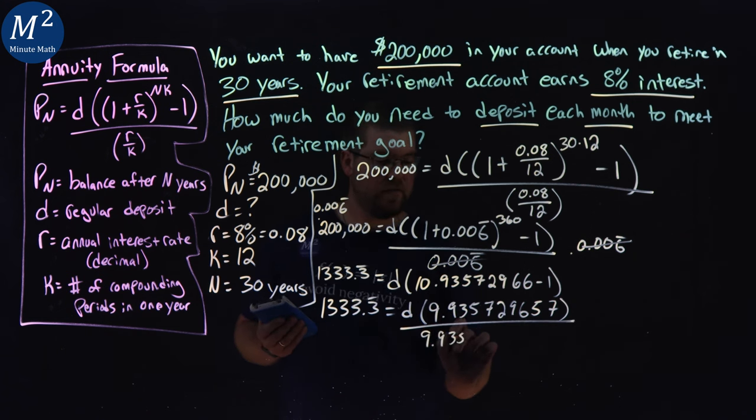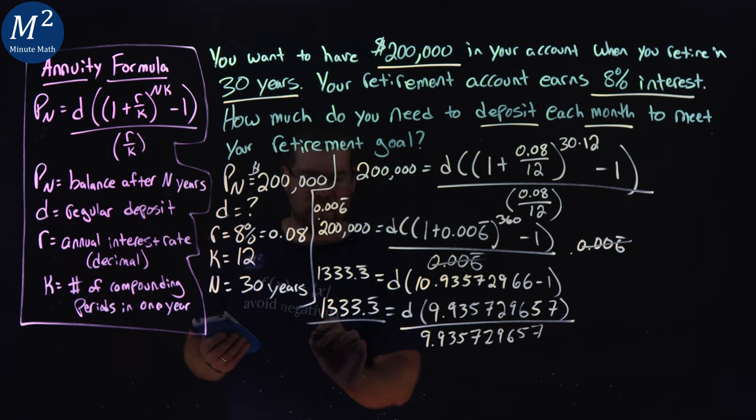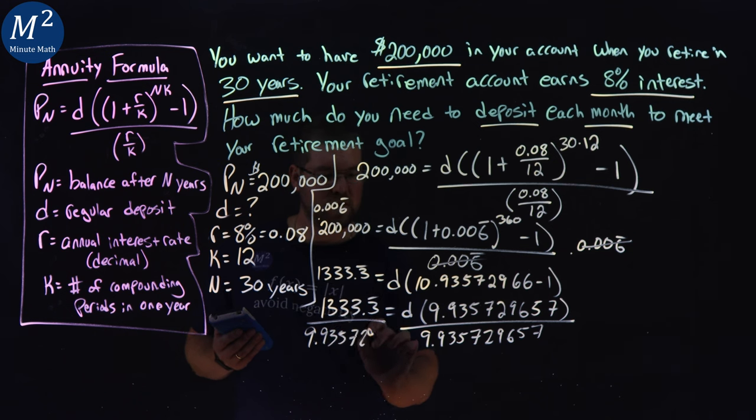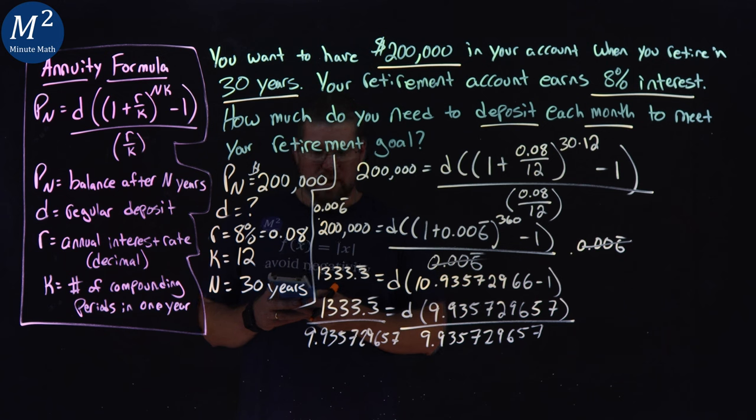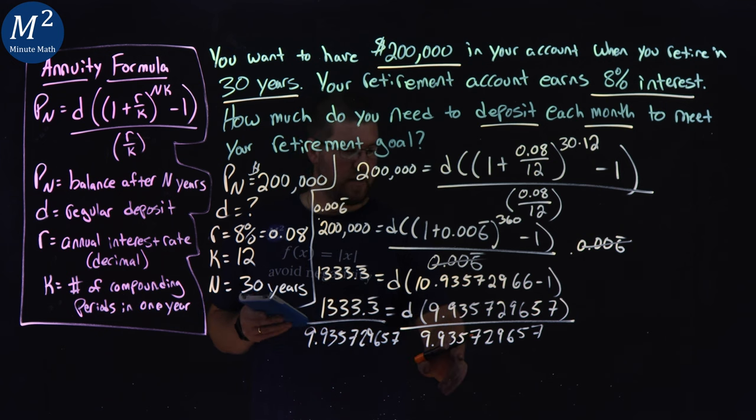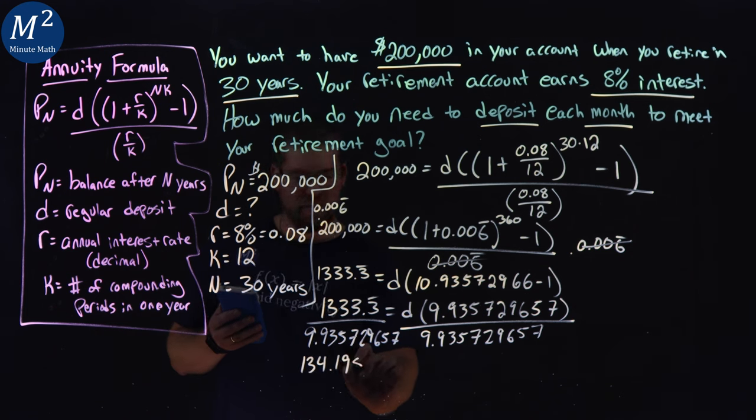9.935729657 to both sides. Take our time. 1, 3, 3, 3, 3.3 repeating, divide by the last answer here, 9.935729657. And we get 134.1958144 for our D value.